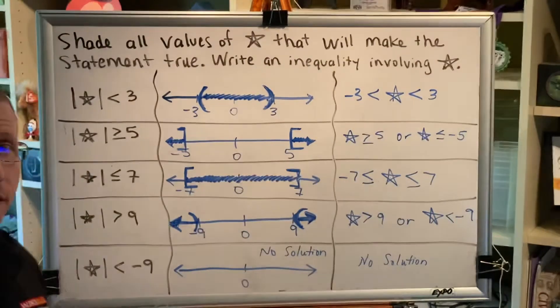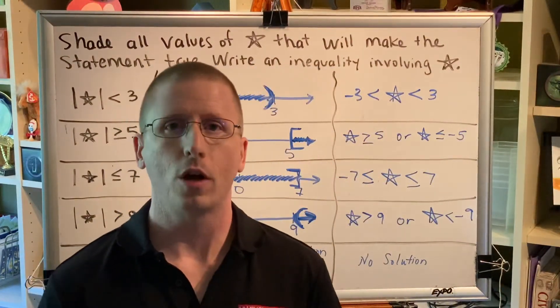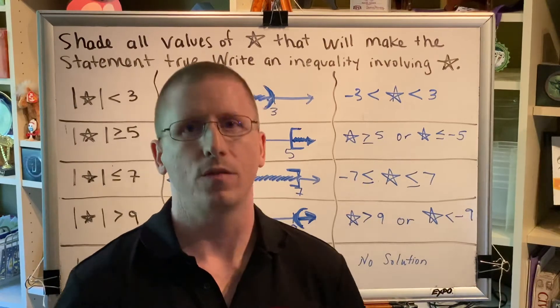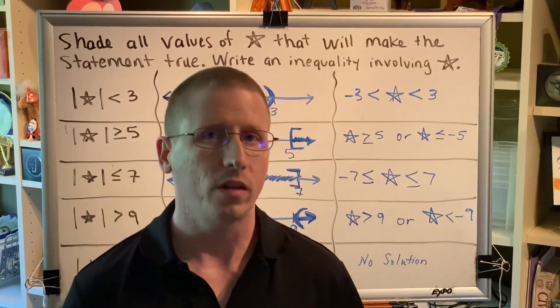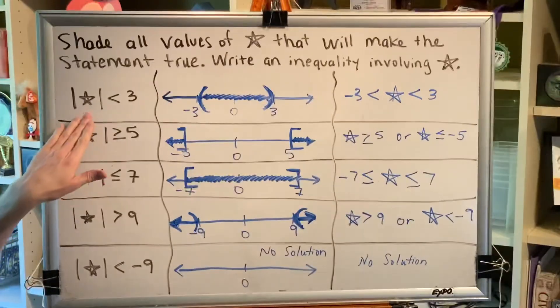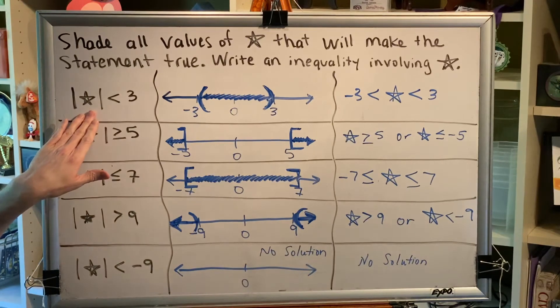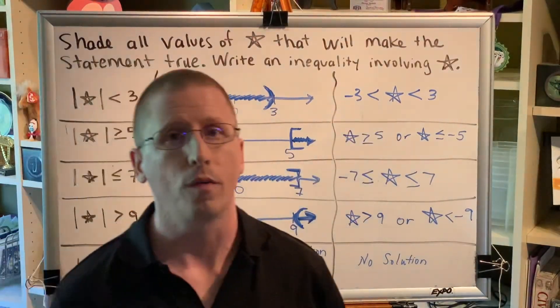Now, I know I've spent a lot of time on this topic, but this is an extremely important skill that you're going to need when we get to the final piece of this learning objective when we are solving absolute value inequalities. Make sure you are confident in your ability to take an inequality involving the absolute value of star and be able to write it as an inequality involving star.